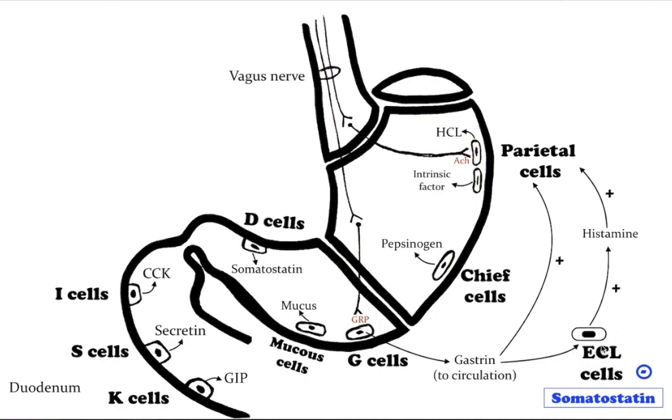Gastrin stimulates enterochromaffin-like cells to secrete histamine. Gastrin is transferred from a specific type of G cell in the gastric epithelium to the ECL cells by blood. Gastrin also targets parietal cells by increasing the amount of histamine and through direct stimulation, causing the parietal cells to increase hydrochloric acid secretion in the stomach.